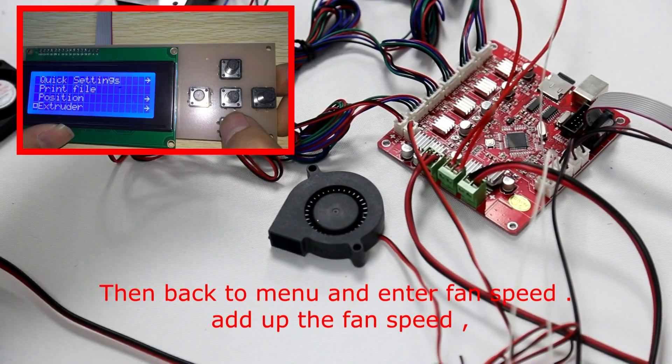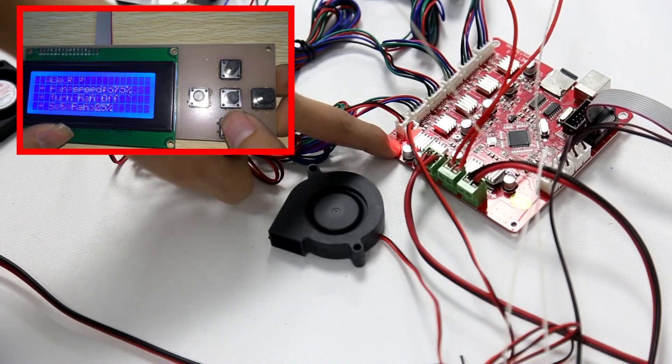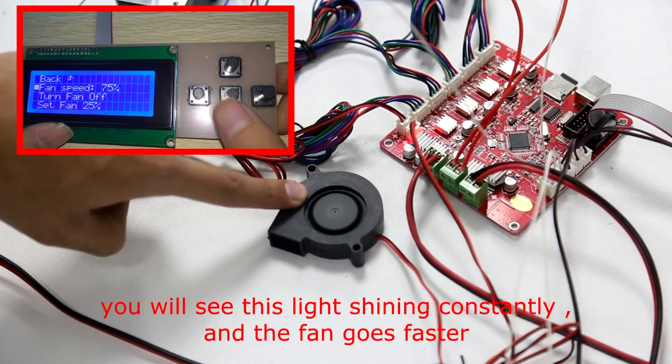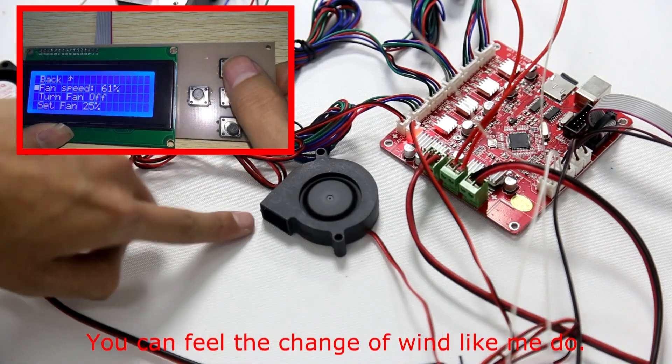Then, back to menu and enter fan speed. Add up the fan speed. You will see this light shining constantly and the fan goes faster. You can feel the change of wind like I do.